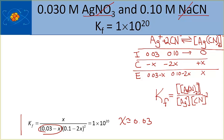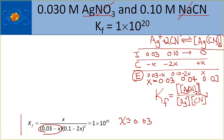Instead of using the equilibrium expression directly, we recognize silver is the limiting reactant and assume x = 0.03. That means the cyanide left is about 0.04, x = 0.03 for the complex ion concentration, and the silver ion is effectively 0.